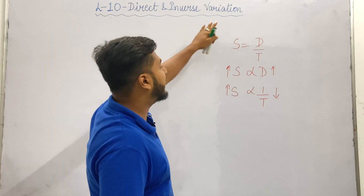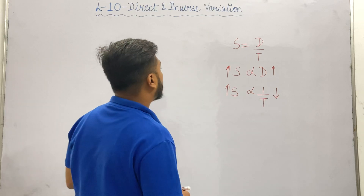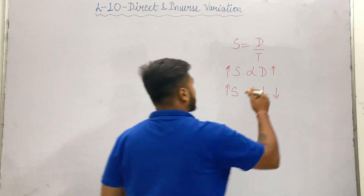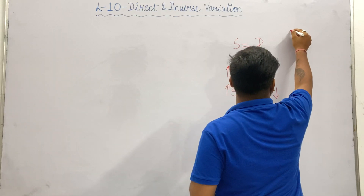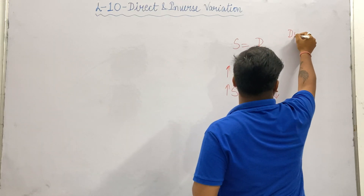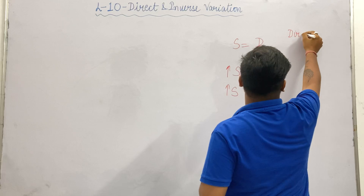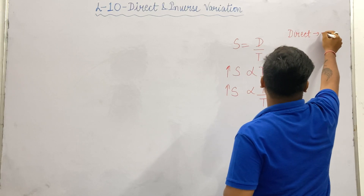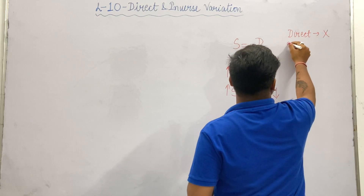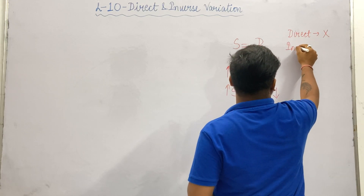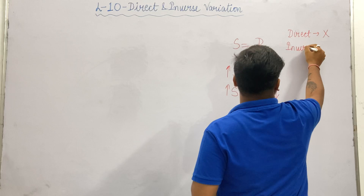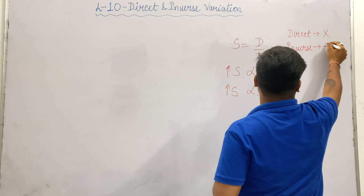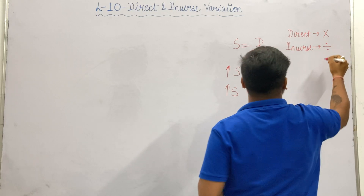Now let's understand the method. Whenever we have direct variation, remember that in the case of direct variation we multiply the values. And in the case of inverse variation, we divide the values.